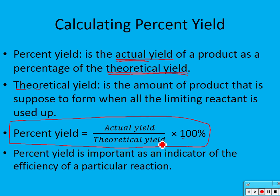Why do chemists use percent yield? Percent yield is important as an indicator of the efficiency of a particular reaction. Obviously 100% yield is great, but most of the time we don't actually get that. There are a lot of reasons for a percent yield being lower than 100% — maybe you made errors in your calculation or measuring, your electronic balance wasn't calibrated right, or maybe the reaction was run under the wrong conditions. We want to strive to get our percent yield as high as possible.